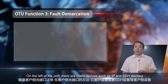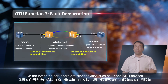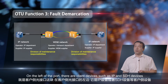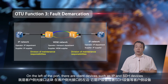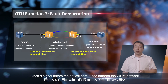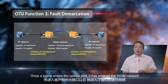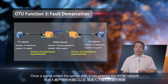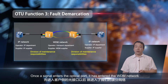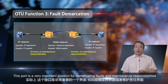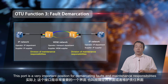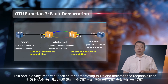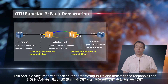On the left of the port, there are client devices such as IP and SDH devices. Once a signal enters the optical port, it has entered the WDM network. This port is a very important position for demarcating faults and maintenance responsibilities.